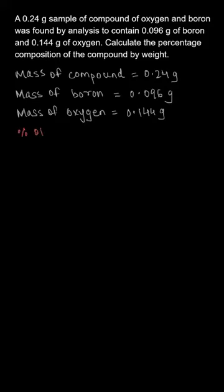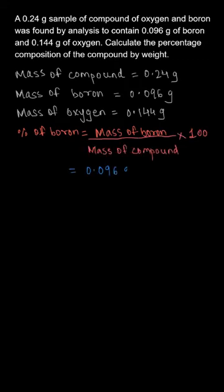First, we need to calculate the percentage of boron present in the compound. Percentage of boron can be calculated by the mass of boron present in the compound divided by the mass of the compound times 100. That is 0.096, the mass of boron, divided by the mass of compound, 0.24 gram, times 100, which gives you 40 percent.